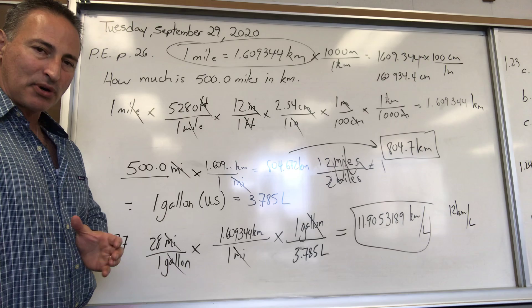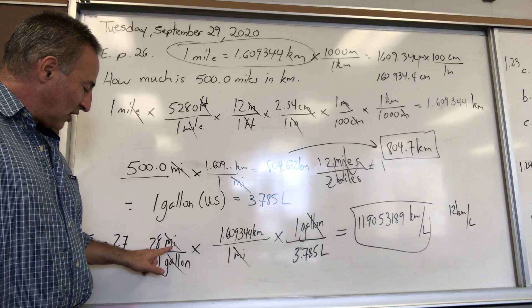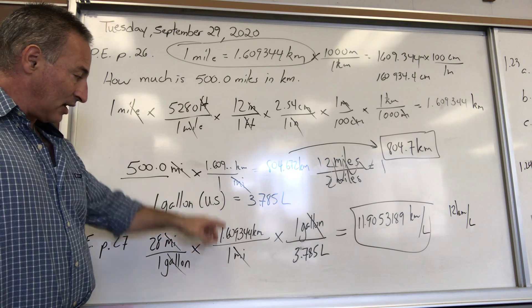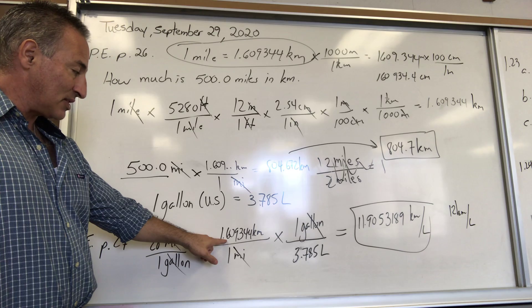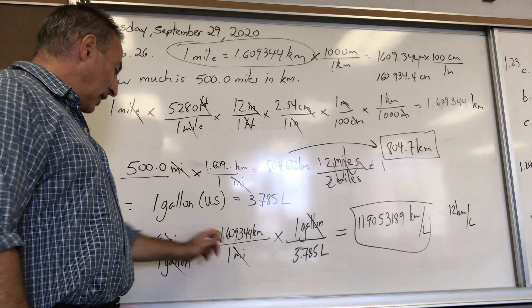No matter how complex the problem is, you break it up into small pieces and you can solve it. That's how things are done in science. No matter how big the problem is, they break it down into small pieces, solve the individual small pieces, and put it all back together. In this case we're going to turn miles into kilometers.